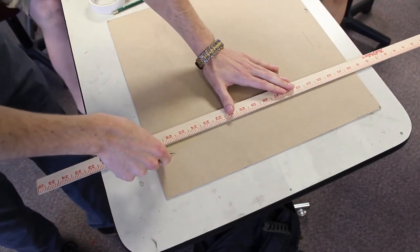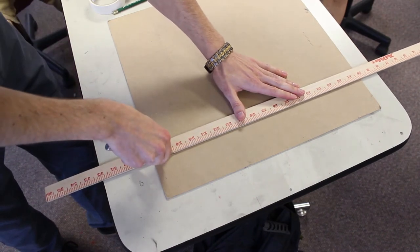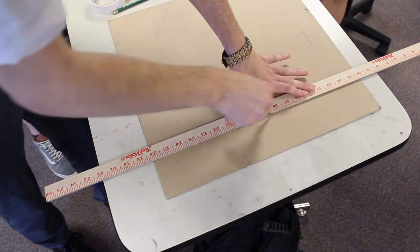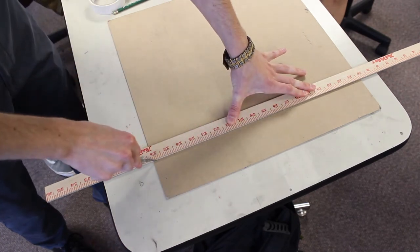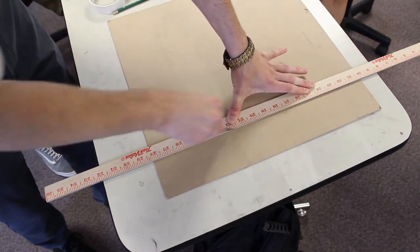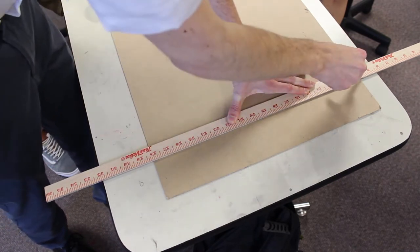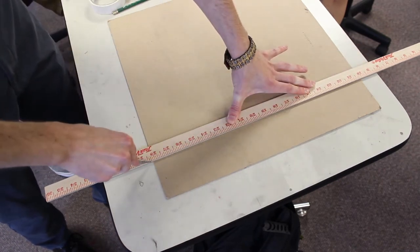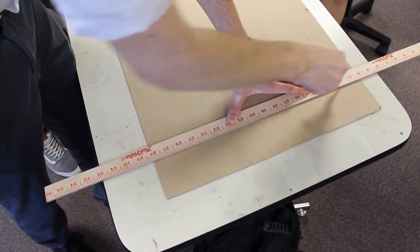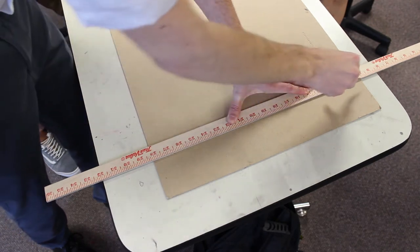So the way you cut is you don't try to get it in one go, right? You want to do like a light score and just set the groove for your next cut. And then just repeat until you get through and you don't have to put a lot of pressure on there. Like if you put a lot of pressure, the chances are that the blade will slip.